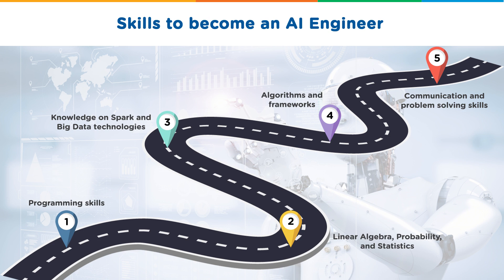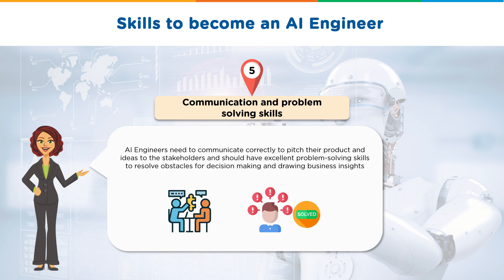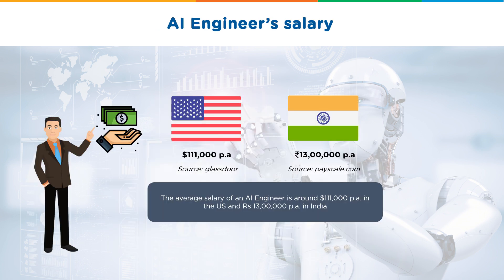The final skill required to become an AI engineer is communication and problem-solving skills. You need to be very good at communication so that you're able to pitch your product and idea to stakeholders. You should also have excellent problem-solving skills to resolve obstacles for decision-making and draw helpful business insights. The average salary of an AI engineer is $111,000 per annum in the United States and 13 lakhs rupees per annum in India.